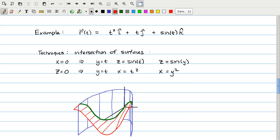Another example. Here we have another simple parametric function. x equals t squared, y equals t, and z equals sine of t. We can think of this, if we like, as the intersection of two surfaces.